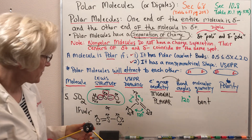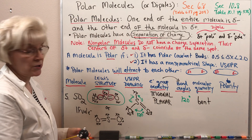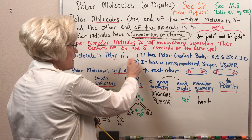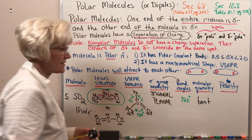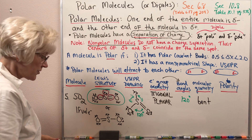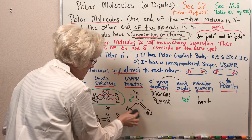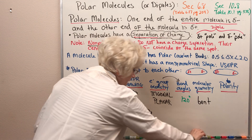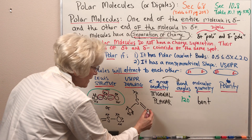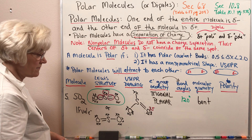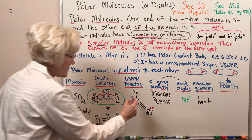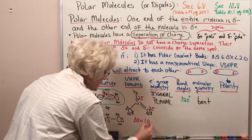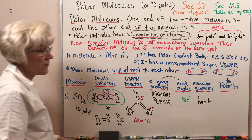Now we need to examine whether or not sulfur dioxide is a polar molecule. Would we consider it a dipole? In order to be a dipole, it has to have polar covalent bonds and a non-symmetrical shape. To evaluate polarity, we look at electronegativity. Oxygen has an electronegativity of 3.5; sulfur, directly below it in family 6A, has an electronegativity of 2.5. The difference is one, placing it squarely in the polar covalent bond range.